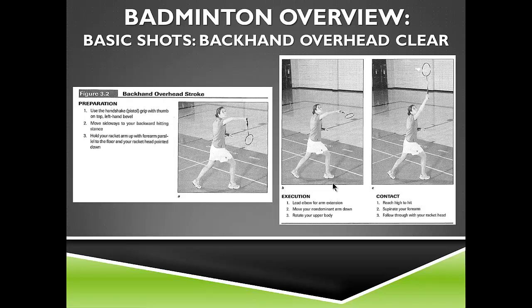The backhand overhead clear is very similar but uses a backhand stroke. Rotate the grip one bevel for the backhand. The step goes toward the back of the court rather than the net, and it's a same-side step — if the right arm is the contact arm, the right foot steps forward. The elbow extends, the birdie is contacted above the shoulder with arms extended, reaching high above the head, following through with the racket head on contact.